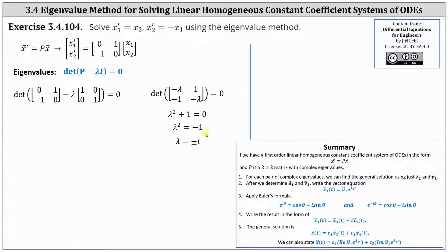Looking in our notes below, for each pair of complex eigenvalues we can find the general solution using just lambda sub one, an eigenvalue, and the vector V one, a corresponding eigenvector. After we determine lambda sub one and V sub one, we write the vector equation x one of t equals V one times e to the power of lambda sub one times t.